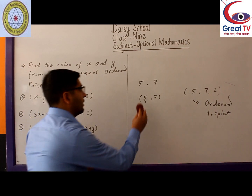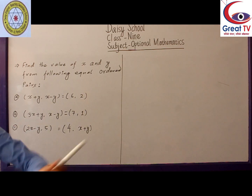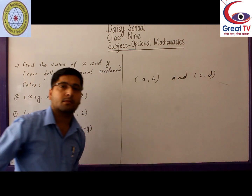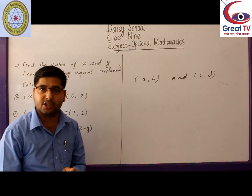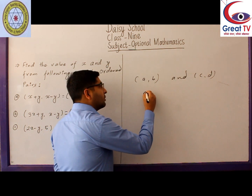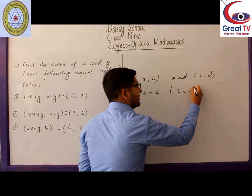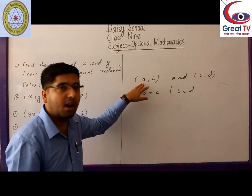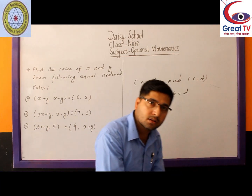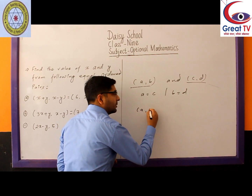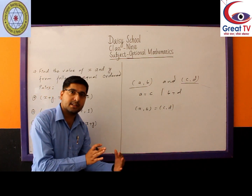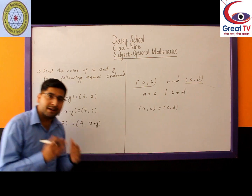Now, equal ordered pairs. If we have two ordered pairs (A, B) and (C, D), these two ordered pairs are said to be equal if the corresponding elements are equal — that means A equals C and B equals D. In other words, the X component of the first ordered pair equals the X component of the second, and the Y component of the first equals the Y component of the second. Then we can write (A, B) = (C, D). These are the basic concepts necessary for solving our equations.